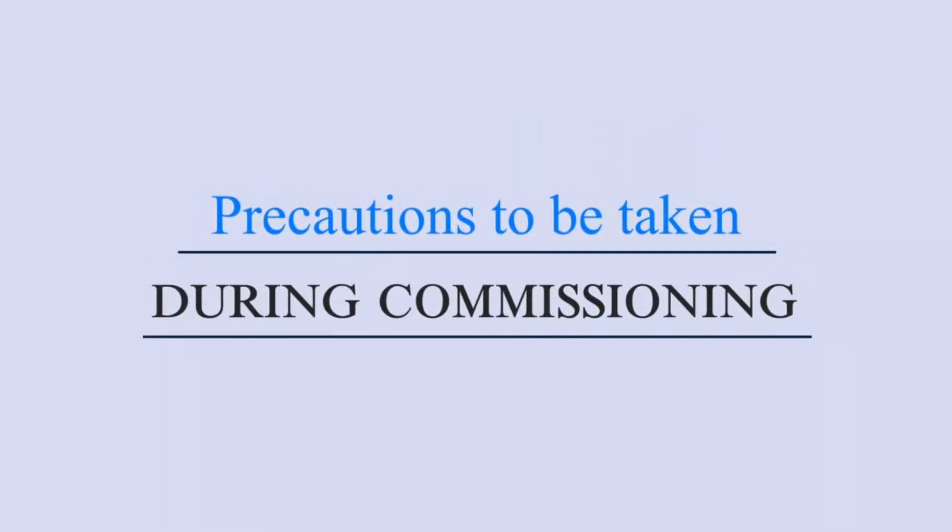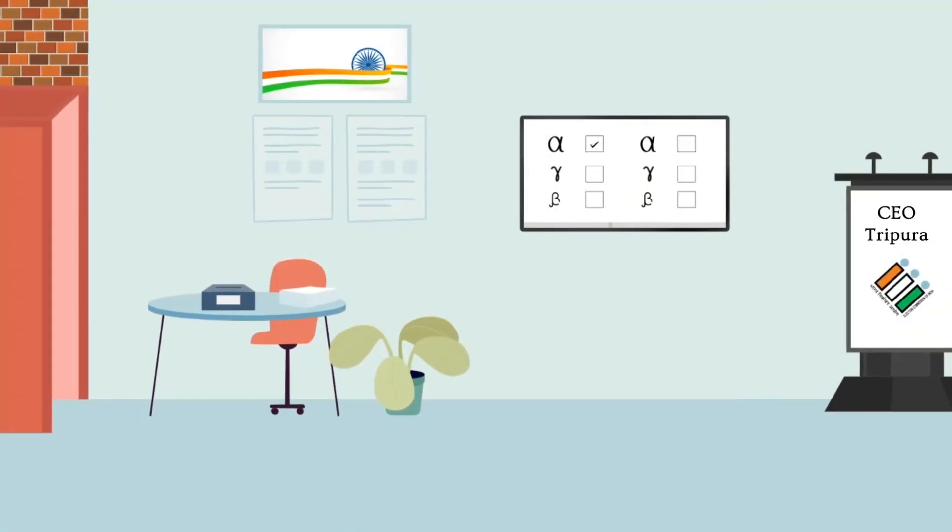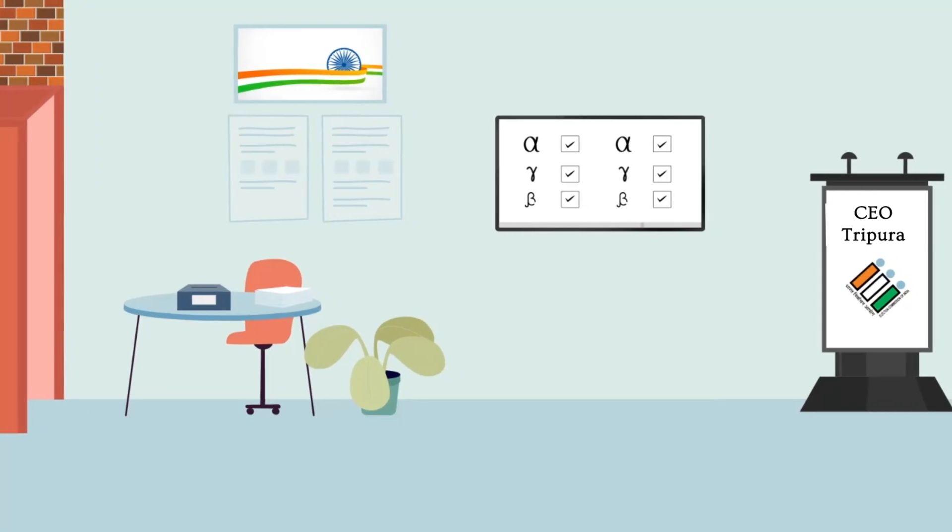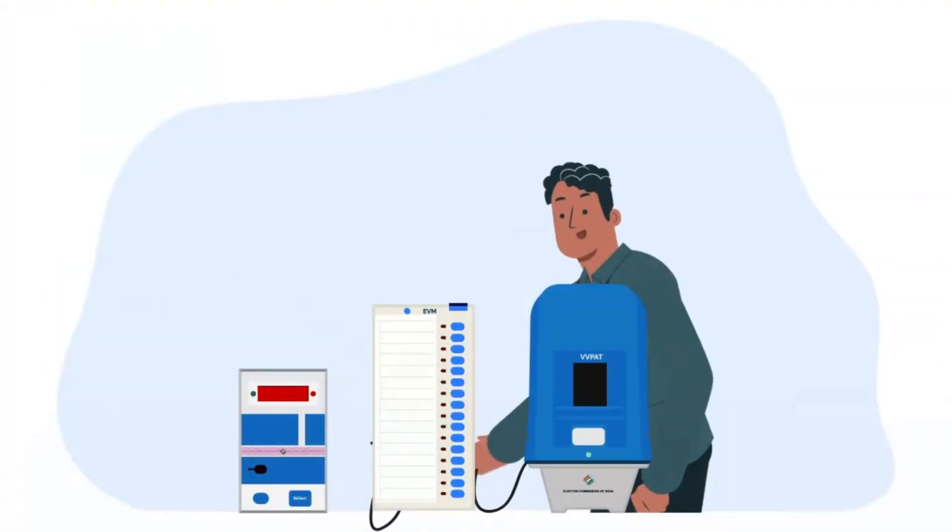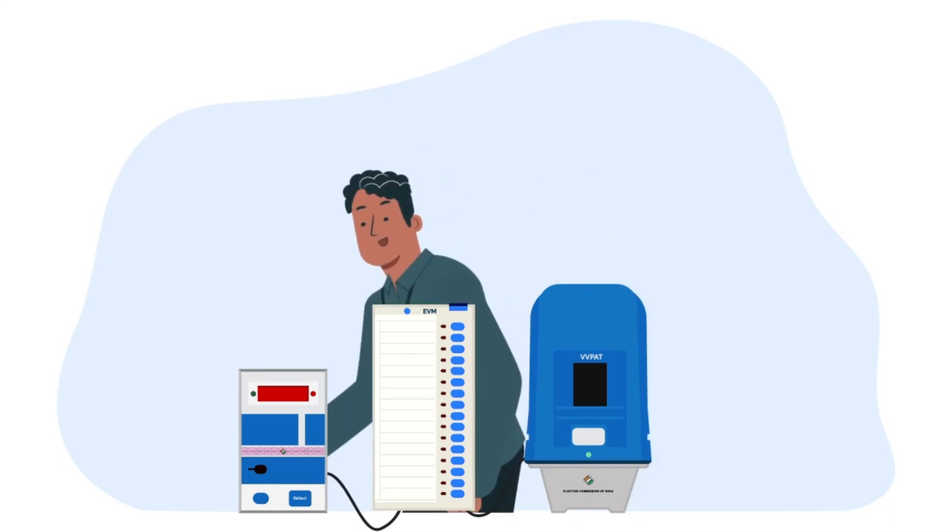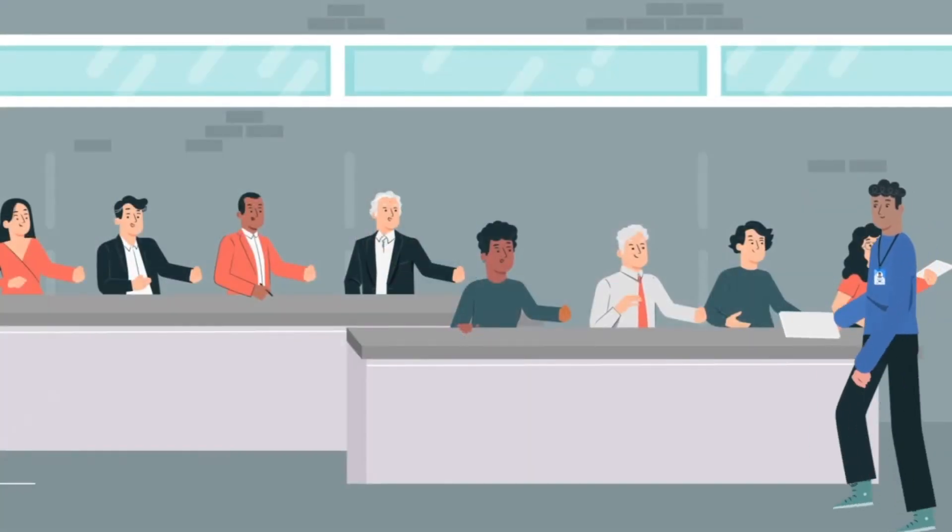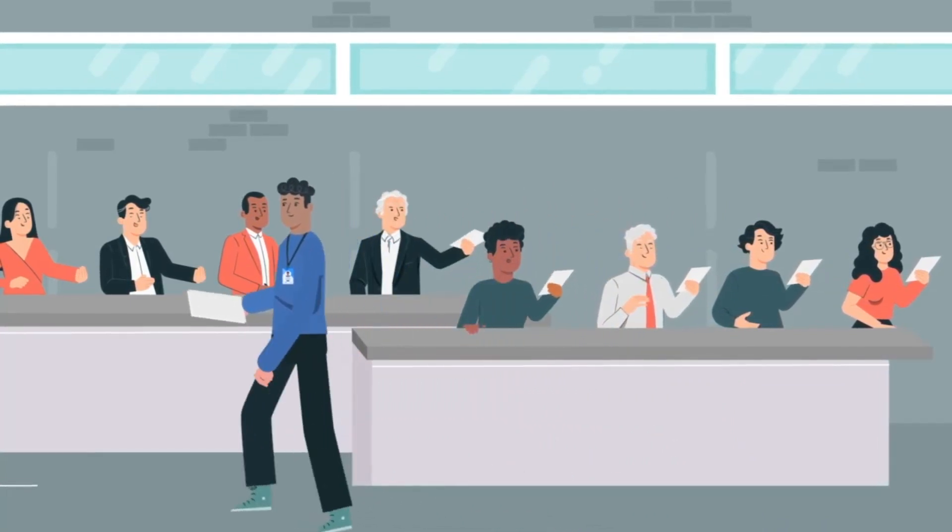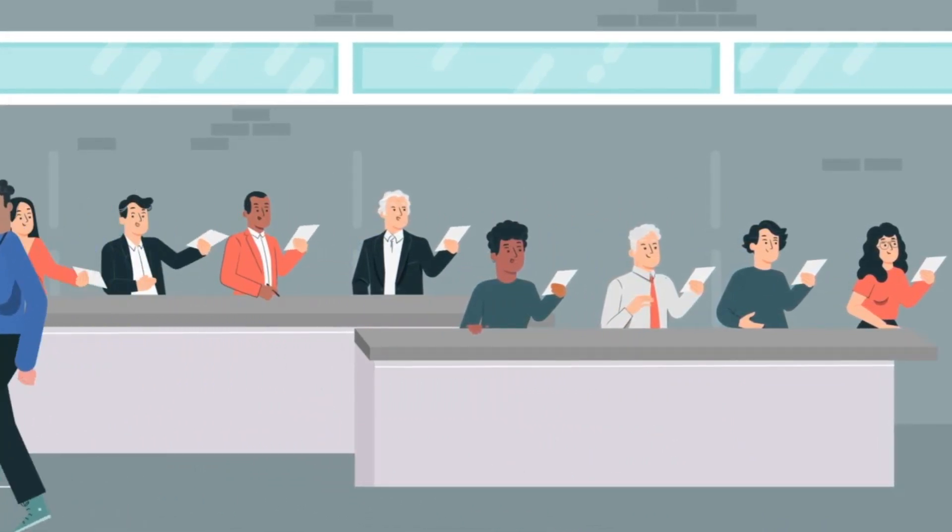Precautions to be taken during commissioning: Don't forget to install TV or monitor for simultaneous viewing of symbol loading in VVPAT by candidates. Don't forget to connect VVPAT with EVM while setting the candidates in series, and intimate in writing the schedule of commissioning of the units to all contested candidates or their agents with proper acknowledgment.